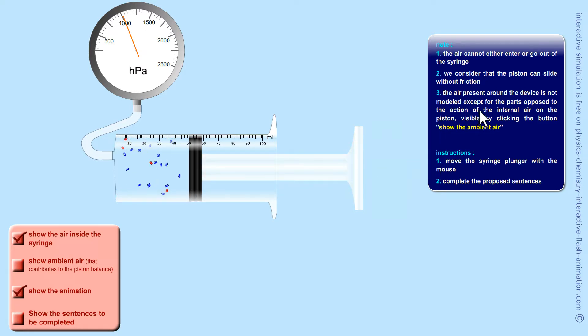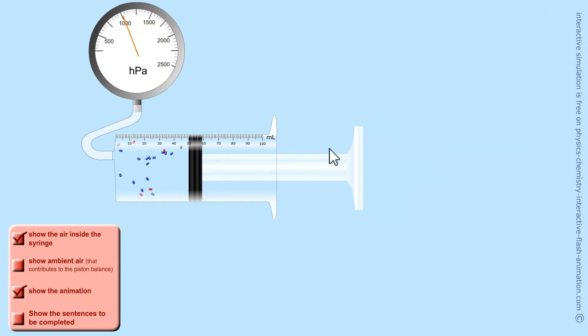So normally, if there was nothing to counteract the effect of these shocks, the piston should come out. Except that there is air outside too. Here is the air outside acting on the same piston here. That's why it's in equilibrium.